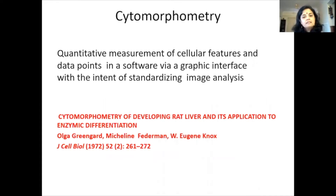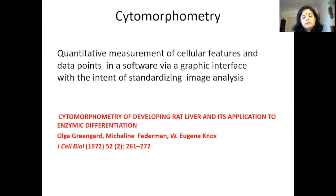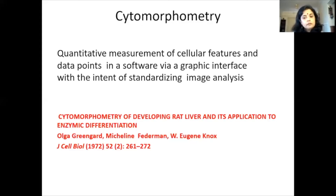In past meetings we've discussed the origin of the word cytomorphometry, and it has gained popularity because of these meetings. But when I did a search, it has multiple results. One of the most credible papers I found was from 1970, on cytomorphometry of developing rat liver and its application to enzymic differentiation. So it has been around for several years, and automation has made it gain popularity. Cytomorphometry is the quantitative measurement of cellular features and data points in a software or computer via a graphic interface, with the intent of standardizing image analysis. It has been used for epithelial cells, and now we use it a lot in hematology.